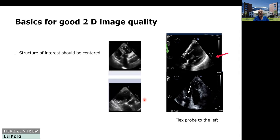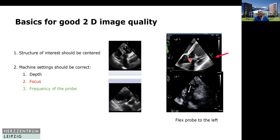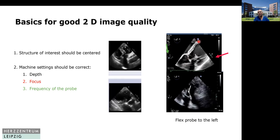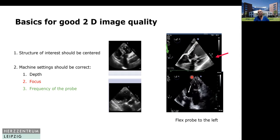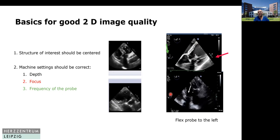In the transgastric views, the same principle applies — machine settings should be correct. If the aortic valve is not really centered, you can flex the probe to the left, where the probe is more at the apex of the left ventricle, and you see what we call more or less centered. And then the focus, again, should be in the right plane.